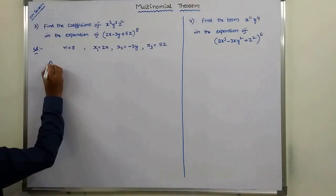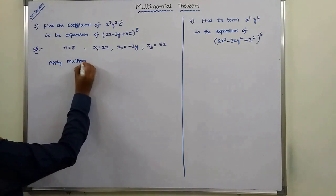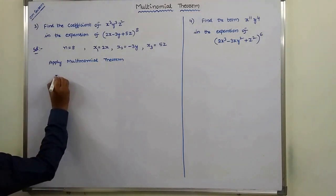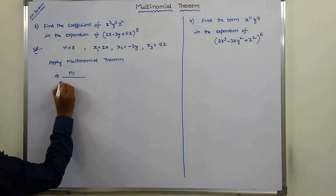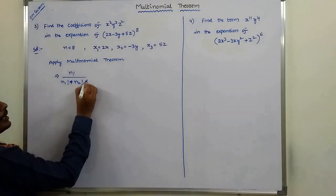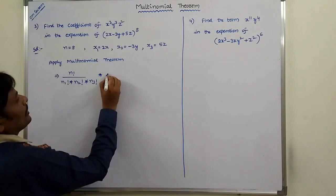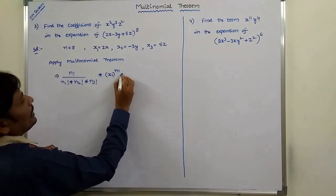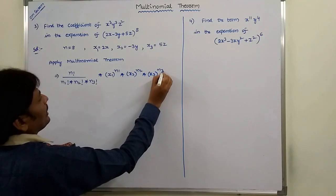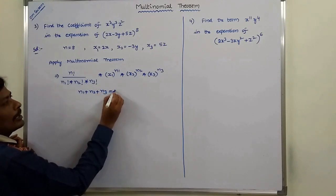Apply the multinomial theorem: n factorial divided by n1 factorial into n2 factorial into n3 factorial, into x1 whole power n1, into x2 whole power n2, into x3 whole power n3. Here n1 plus n2 plus n3 is equal to n.